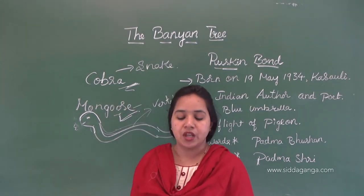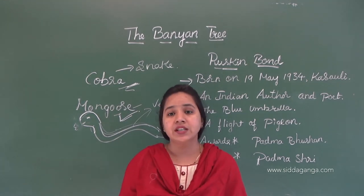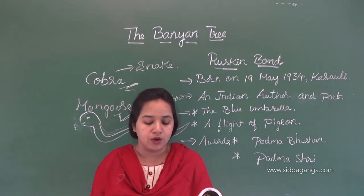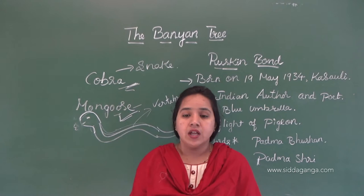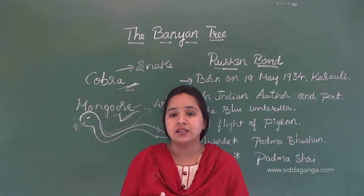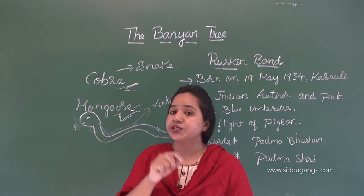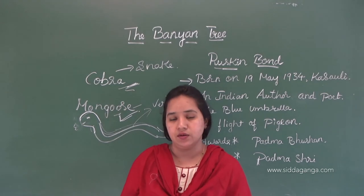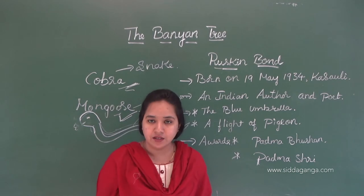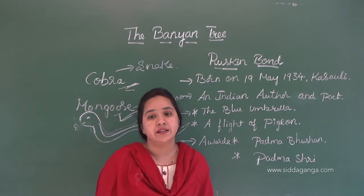You must have seen a banyan tree — you have seen so many banyan trees, that is aaladamara. This is a story about what the author saw. What we are going to read in this lesson is the author describing the whole incident he witnessed under the banyan tree. The author, also called writer or narrator, is Ruskin Bond.